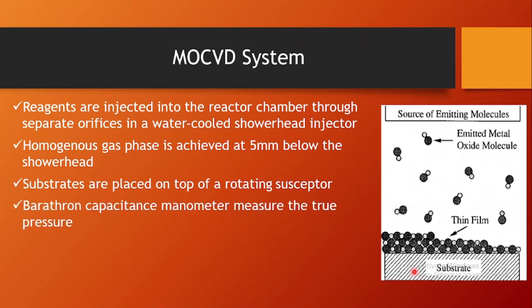The baratron is a capacitance manometer device that measures the true pressure inside the reaction chamber. Its measurement is insensitive to the type of gas being measured — whether reactive or inert — so the pressure reading remains unaffected. Because it measures true pressure accurately, the baratron manometer is used in the MOCVD technique, and these instruments reflect the high accuracy and excellent quality of the thin film produced.